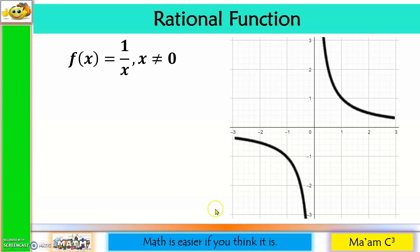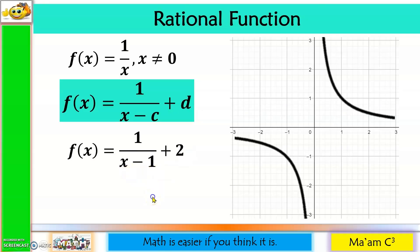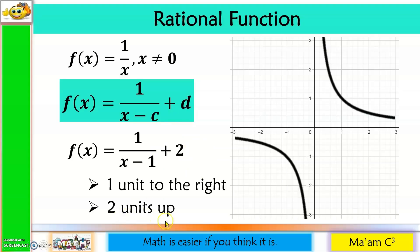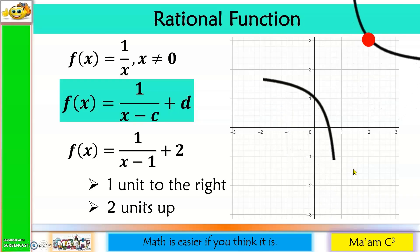For the rational function, consider f(x) = 1/(x - 1) + 2. Minus 1 makes the graph move 1 unit to the right, and plus 2 makes it move 2 units up. Using the point (1, 1) on the original graph: moving 1 unit right and 2 units up gives the transformed position — and the graph confirms this is correct.